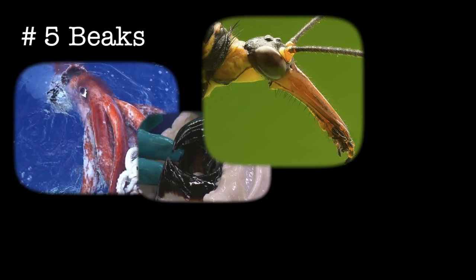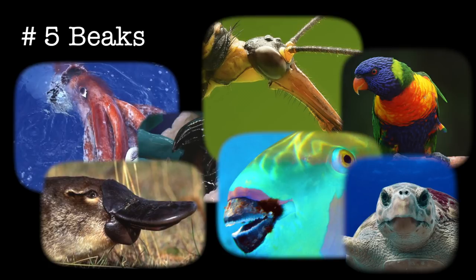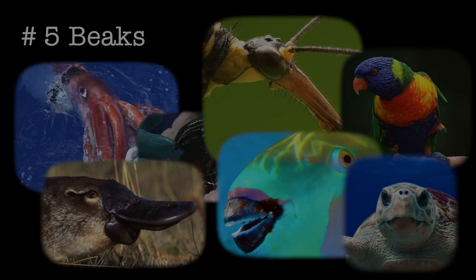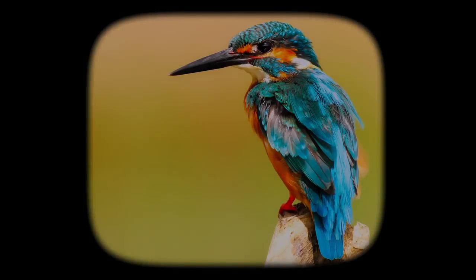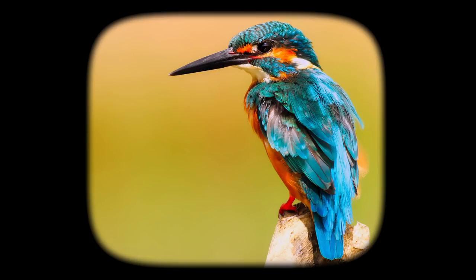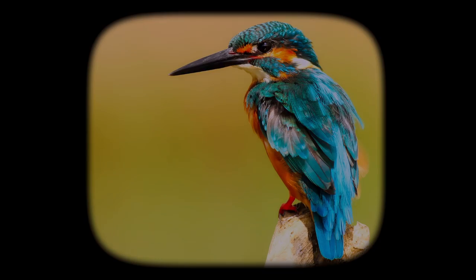And my personal favorite, number five: beaks. Beaks have appeared in cephalopods, insects, birds, fish, mammals, and turtles, all independently from one another. In most animals, beaks consist of two bony projections which protrude from the upper and lower mandibles.